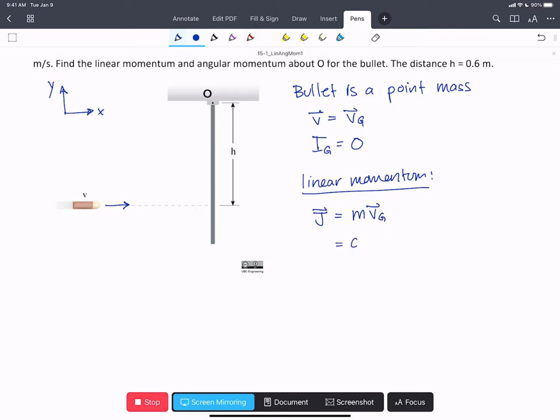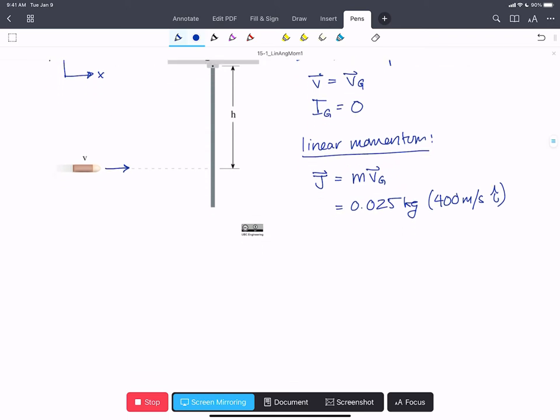That's going to be 0.025 kilograms times 400 meters per second in the I hat direction as we've shown. Remember that momentum is a vector so it will always have a direction. And we can write that the final vector of linear momentum is 10 kilograms meters per second in the I hat direction.